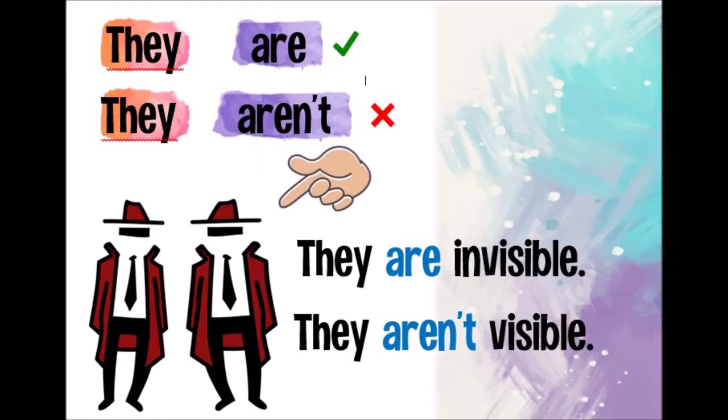Si hablamos de un grupo de personas, decimos ellos o ellas. In English, we say they. They are or they aren't. They are invisible. They are invisible. They aren't visible. They aren't visible.